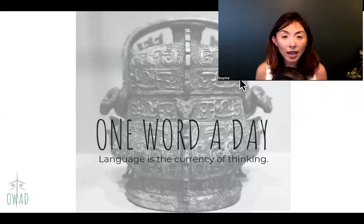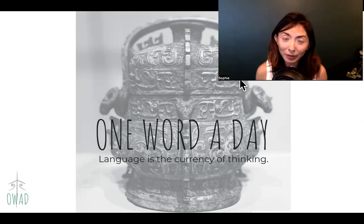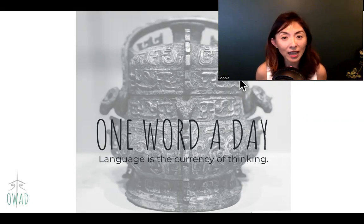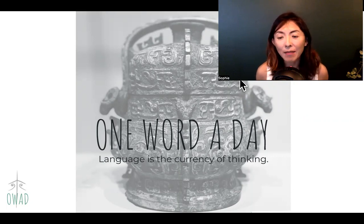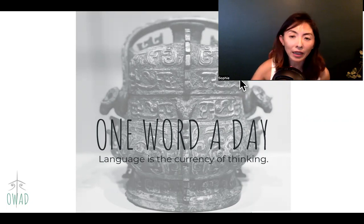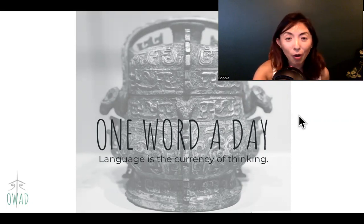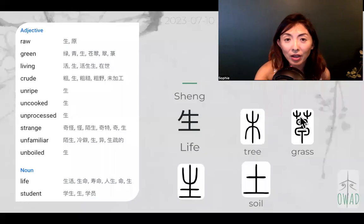Hi, welcome to One Word a Day. I'm Sophie, your pilot into the interface of Chinese. We are going to continue our exploration in one more Chinese expression today. And for August, I want to make it light and fun by using two characters to make meaning. And those characters all share the same first character, which is Xiong.